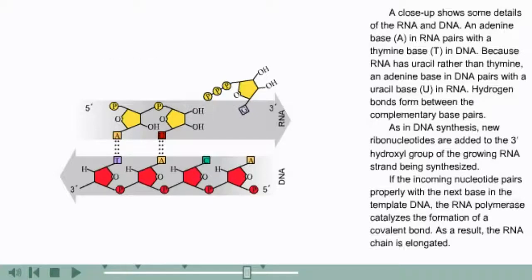RNA strand being synthesized. If the incoming nucleotide pairs properly with the next base in the template DNA, the RNA polymerase catalyzes the formation of a covalent bond. As a result, the RNA chain is elongated.